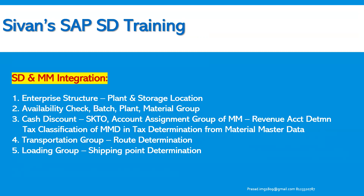Availability check, batch, and plant material group — all these factors are also included in the material master data. When we create the material master data in the practice system, we all see these important key fields. Cash discount will always be activated. We maintain values in the account management group of material master data, which is one of the key factors in determining the revenue account determination. We also maintain the value in the tax classification of the material master data, which is one of the key factors in determining the tax determination.